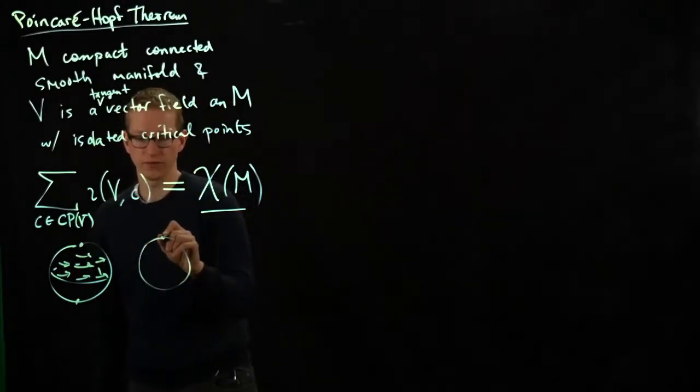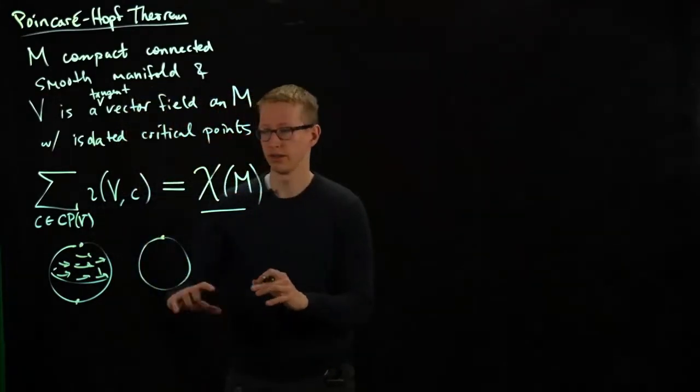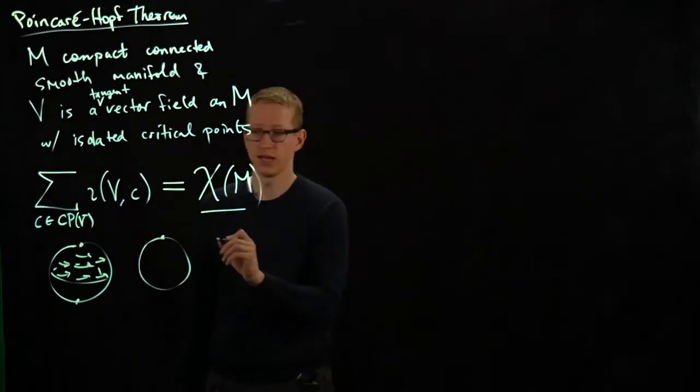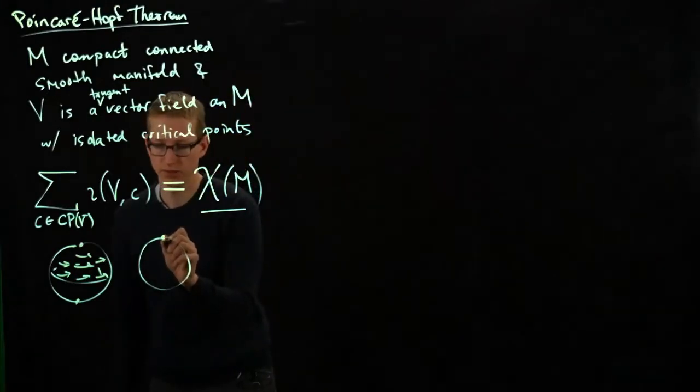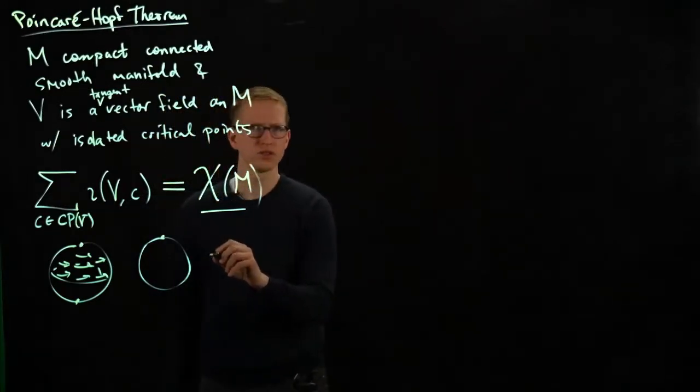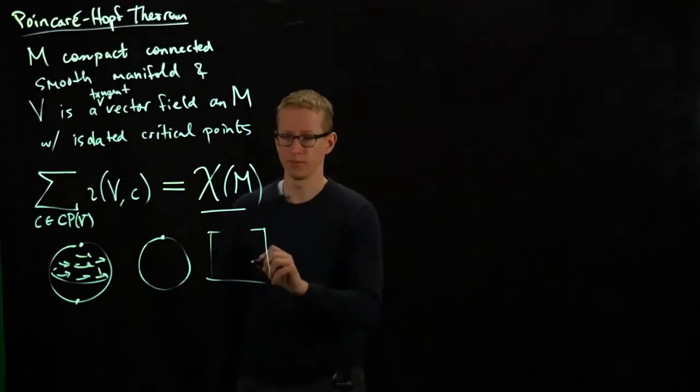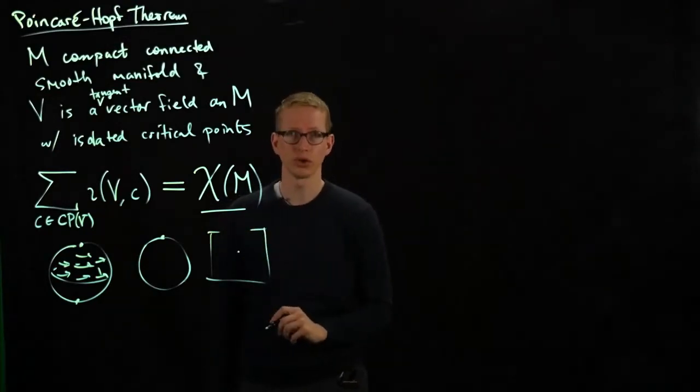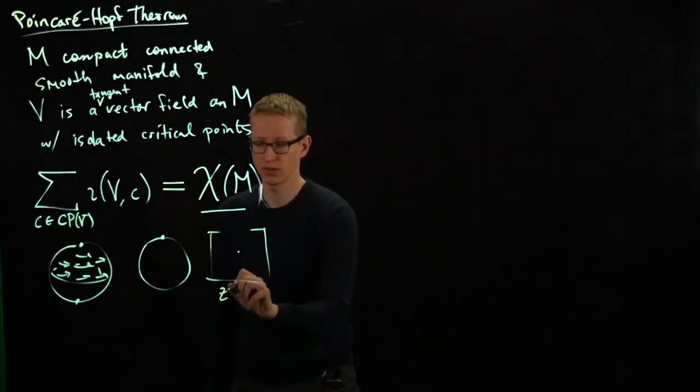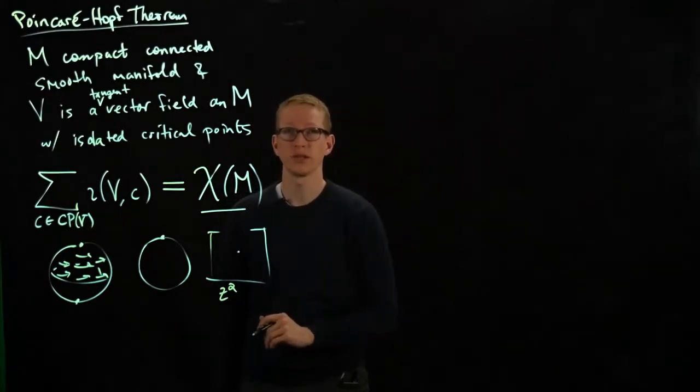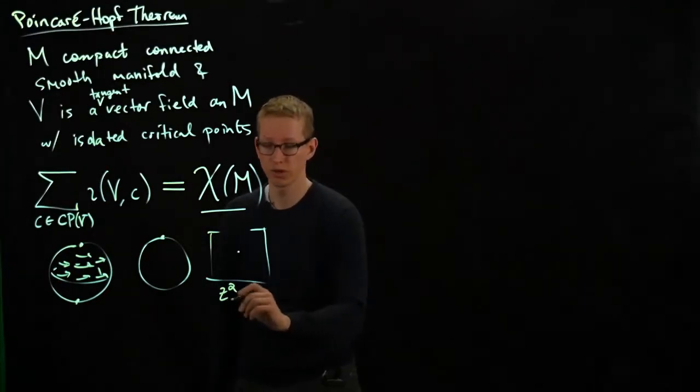And if I take another vector field, this one's much, much harder to draw. I won't be able to do a good job, but there is a vector field on the sphere which has index 2. And index 2 vector fields look something like you take the complex plane, let's say at the origin, and you compute the function z squared.